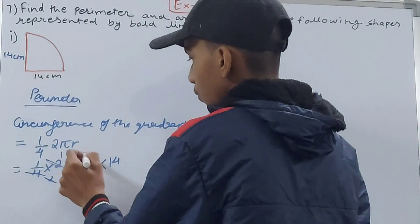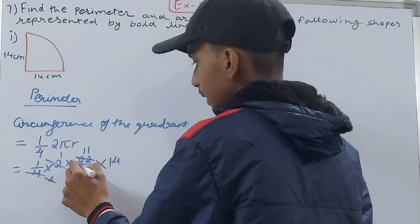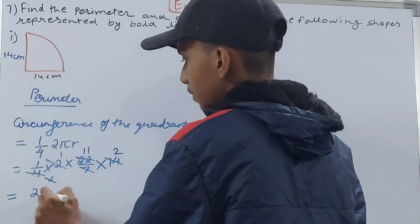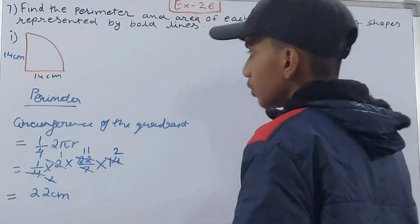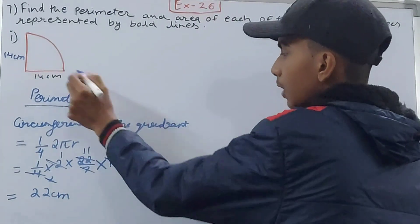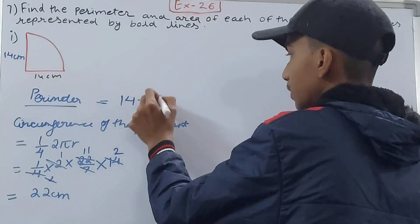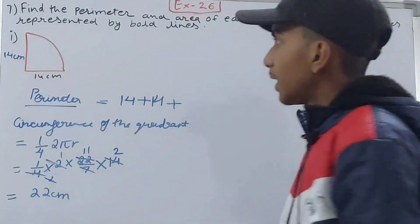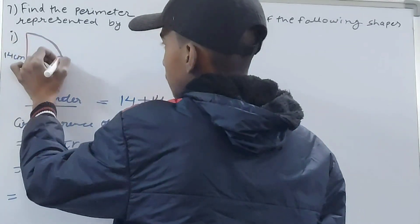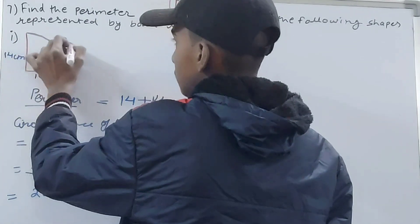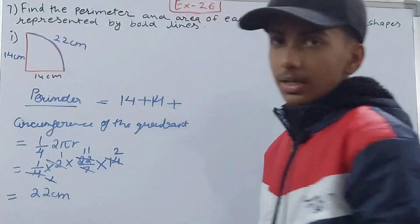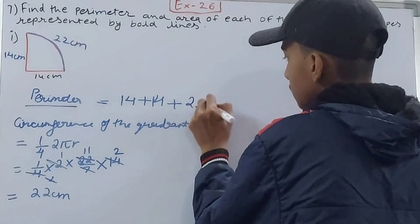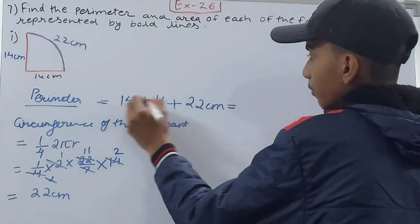Solving: 4 and 2 cancel — 2 goes once; 22 goes 11 times into 22, and 14 goes 2 times into 7 — giving 22 centimeters. So the perimeter equals 14 + 14 (the two straight sides) plus the curved circumference of 22 centimeters, giving 14 + 14 + 22 = 50 centimeters.